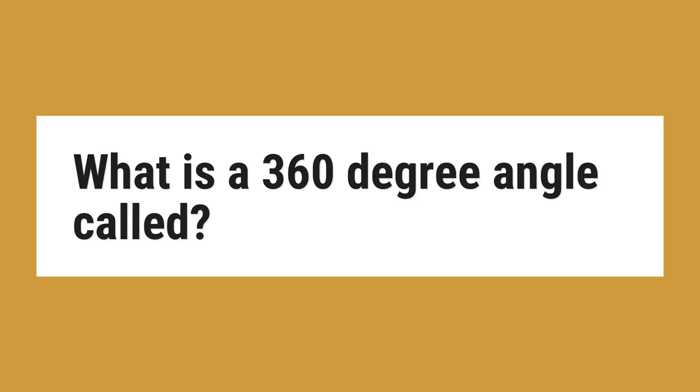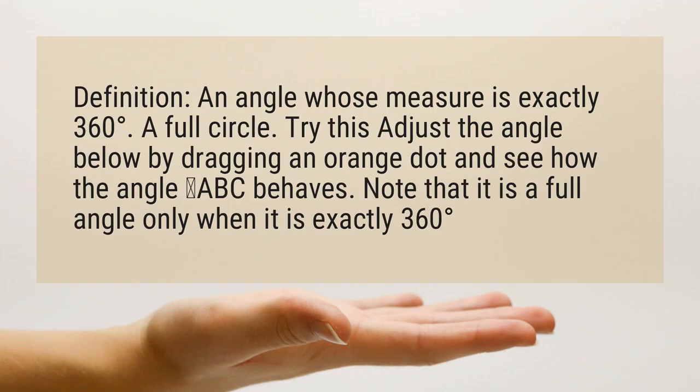What is a 360-degree angle called? Definition: an angle whose measure is exactly 360 degrees. A full circle.